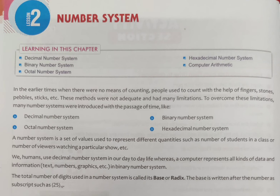First, we have to study about what is a number system. A number system is a set of values used to represent different quantities. When we represent different quantities, we need a particular number system, such as counting the number of students in a class or the number of viewers watching a particular show.